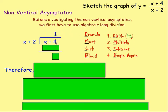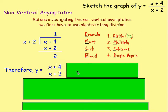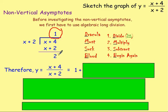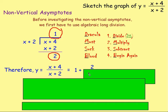Multiply: 1 times X is X, and 1 times 2 is 2. Then subtract: X take away X gives you zero — those first terms should always cancel; if they don't, you've made a mistake. And 4 take away 2 gives you 2. Therefore, Y equals X plus 4 over X plus 2 equals 1 remainder 2, which we write as 1 plus 2 over X plus 2.